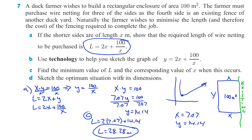Sketch the optimum situation with its dimensions. So this is 7.07, 7.07 for the shorter sides, and y is 14.14 — all in meters. That takes care of number 7.